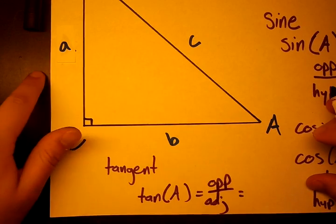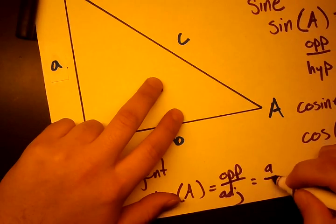So what is the opposite? We already know it's a. And what is the adjacent? We already know it's b. So it's a over b.